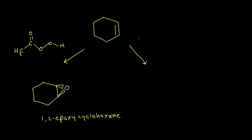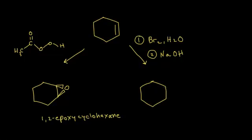Let's start with cyclohexene. This time, in the first step, we'll add bromine and water, which will form our halohydrin. In the second step, we'll add sodium hydroxide to act as our base. We get an intramolecular Williamson ether synthesis, and we end up with the same product: 1,2-epoxycyclohexene.